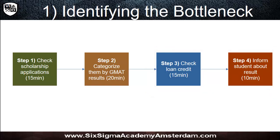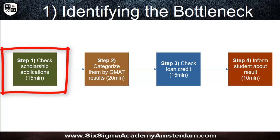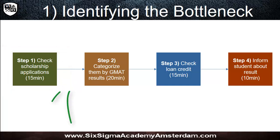The first thing we have to do is identify the bottleneck — we look for the slowest step of all. We can see clearly that step two, with its 20 minutes per application, is the slowest. It is comparable to that part of the highway where we had the sheep, and it is going to determine the speed of the process. At the fastest rate, every 20 minutes one student can be processed — or three applications per hour. It doesn't matter that four scholarship applications can be checked per hour at step one, because they pile up at step two.